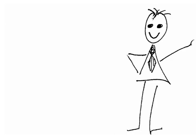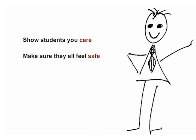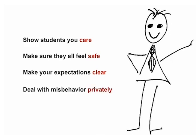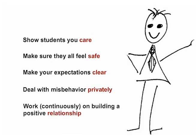When it comes to correcting student behavior, what kinds of things did he say are important? Showing your students you care about them. Making sure that they all feel safe. Making your expectations clear. Dealing with misbehavior privately, which shows them respect. And most importantly, always working on building your positive relationship with them.